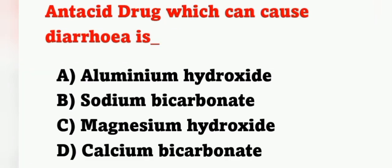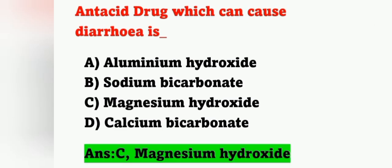Next question: the antacid drug which can cause diarrhea is — option A: aluminum hydroxide, option B: sodium bicarbonate, option C: magnesium hydroxide, option D: calcium bicarbonate. Antacids are given to reduce acidity. The one that causes diarrhea is magnesium hydroxide, option C is the correct answer.